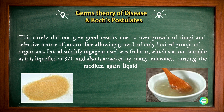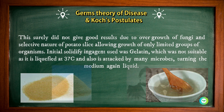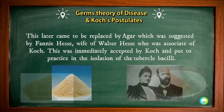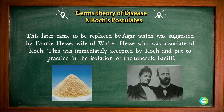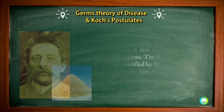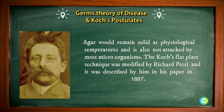The initial solidifying agent used was gelatin, which was not suitable as it liquefied at 37 degrees Celsius and was attacked by many microbes, turning the medium liquid again. Gelatin was later replaced by agar, suggested by Fanny Hesse, the wife of Walther Hesse, who was an associate of Robert Koch. This was immediately accepted by Koch and put into practice in the isolation of tubercle bacilli. Agar remains solid at physiological temperatures and is not attacked by most microorganisms.